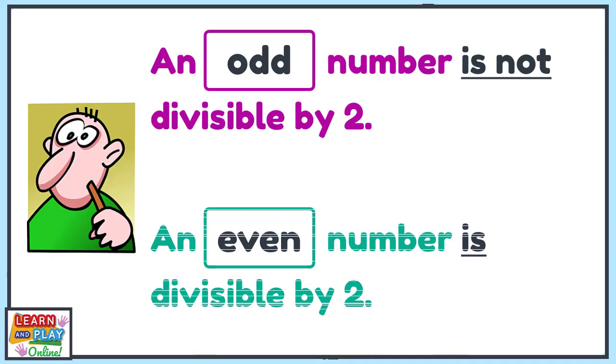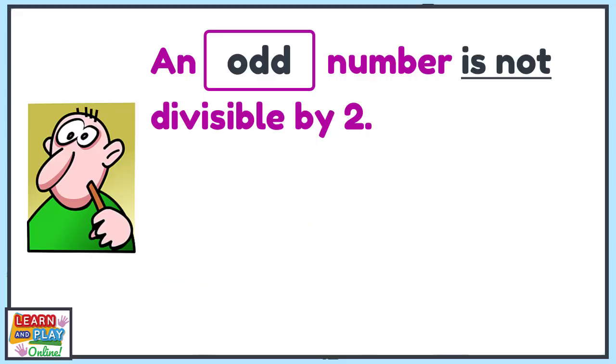We are going to look at odd numbers first. If an odd number is not divisible by 2, this means that the number cannot be shared equally into two groups.